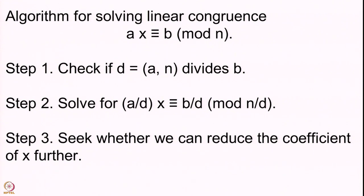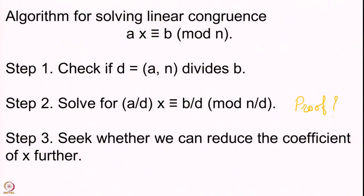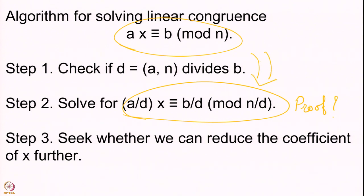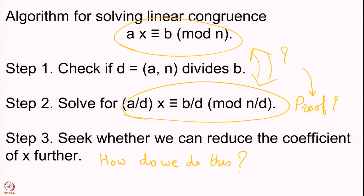The third step is to seek whether we can reduce the coefficient of x further. There are two methods, but before we do that we need to prove the statement that we have made here — that solving the reduced equation is equivalent to solving the original. So we will give this proof. Right now we are going to state and prove the first part.